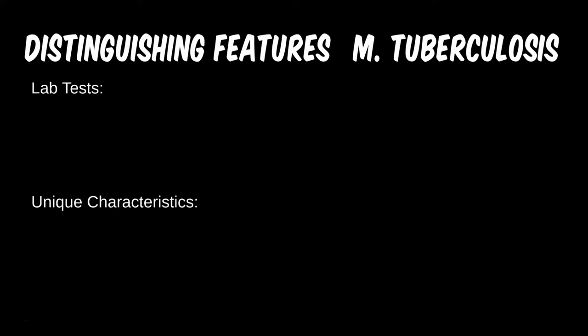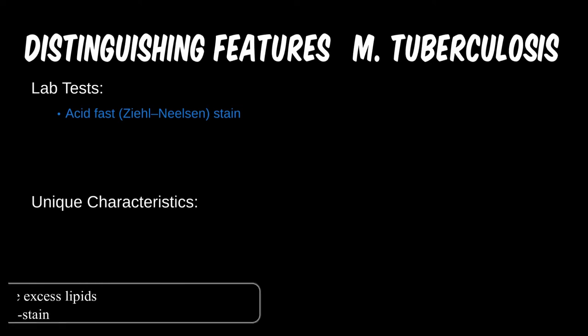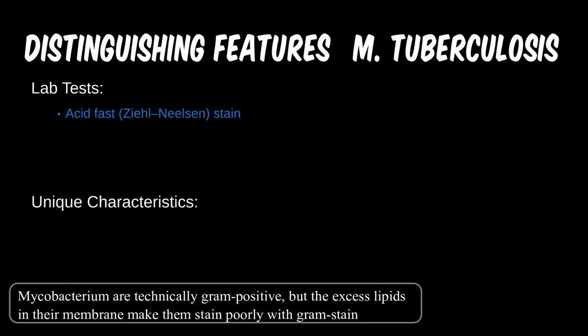Luckily, we do have the acid-fast stain that can help. This stain targets the mycolic acids found in mycobacterium, which are very fatty. In comparison, the gram stain dyes peptidoglycans, which are mostly proteins and sugars.